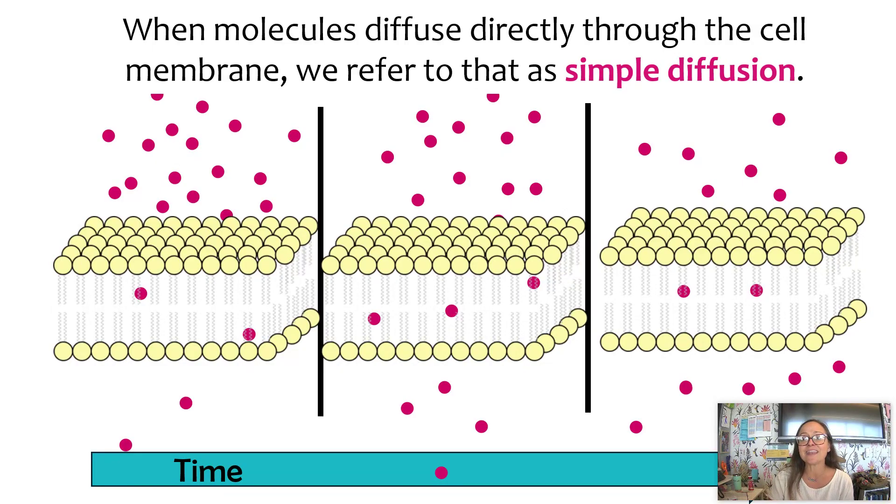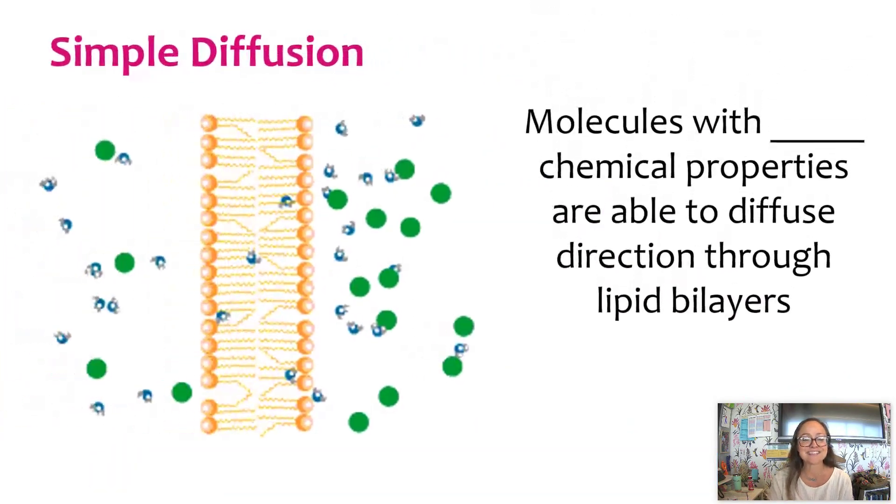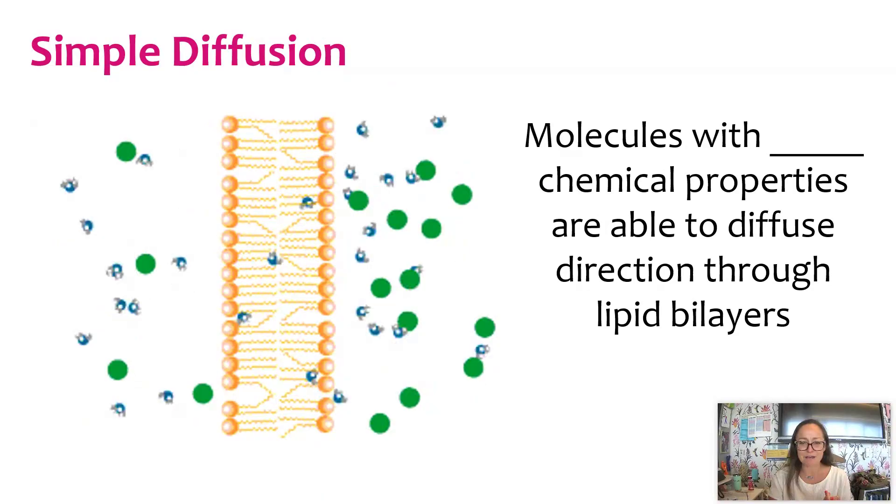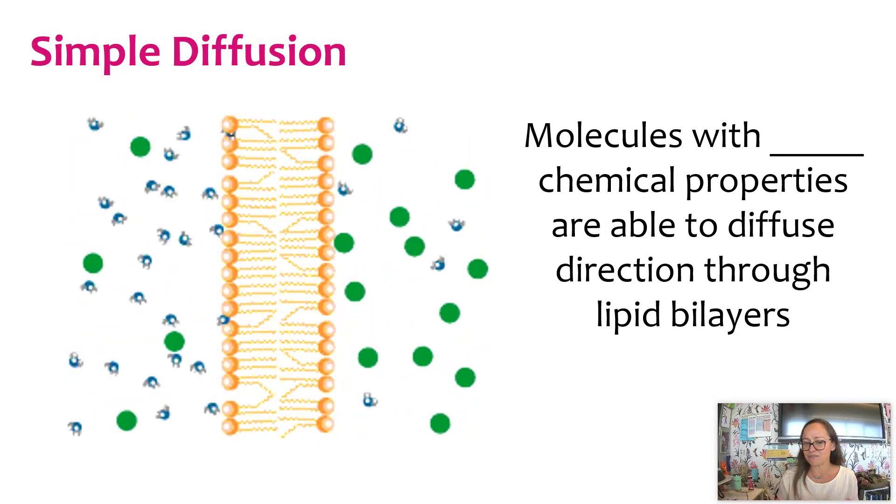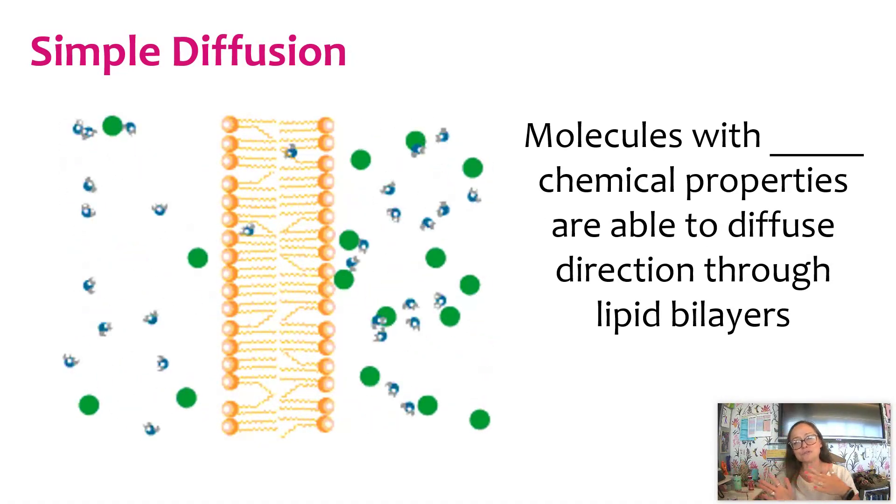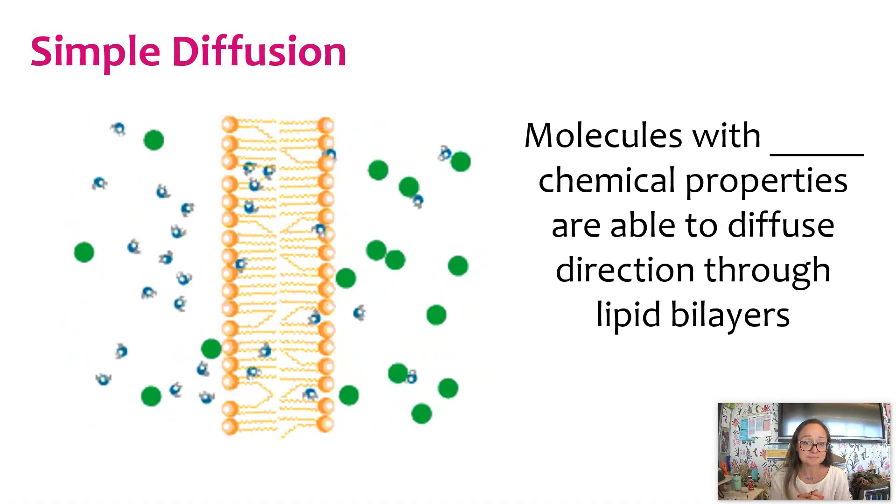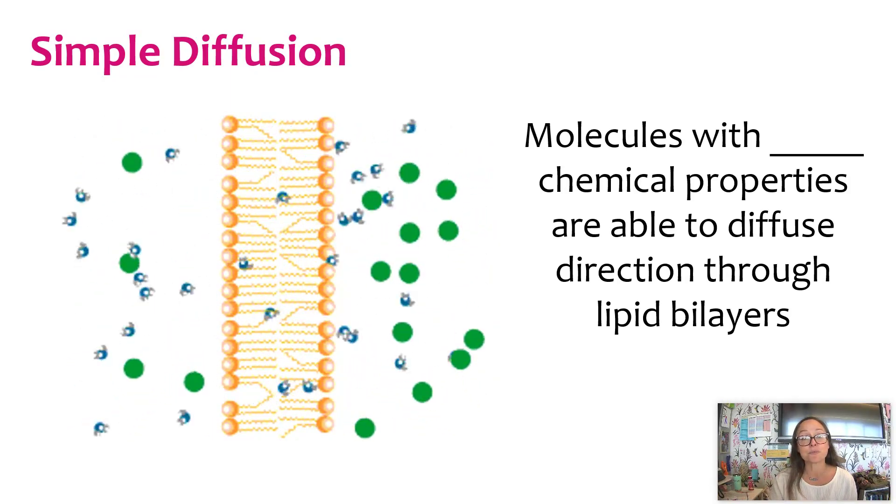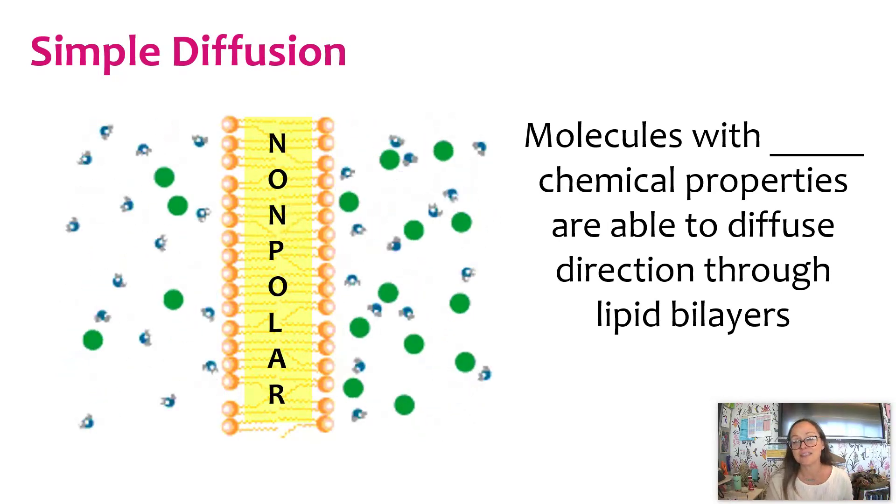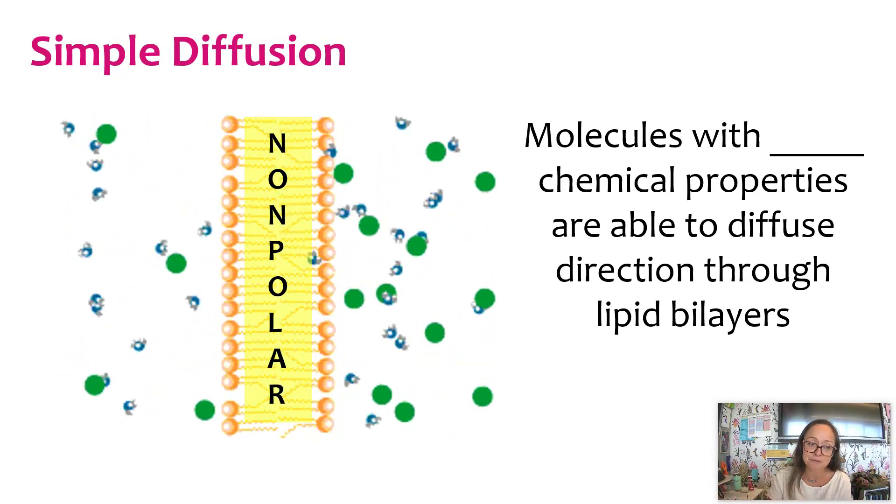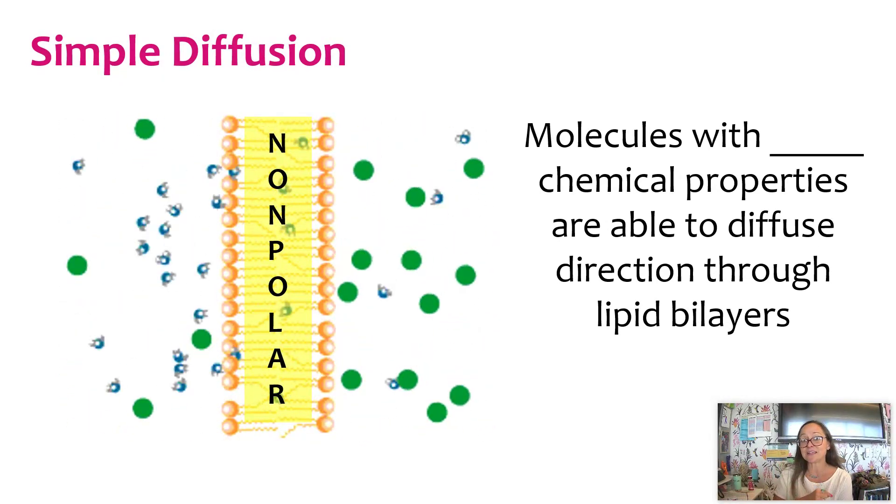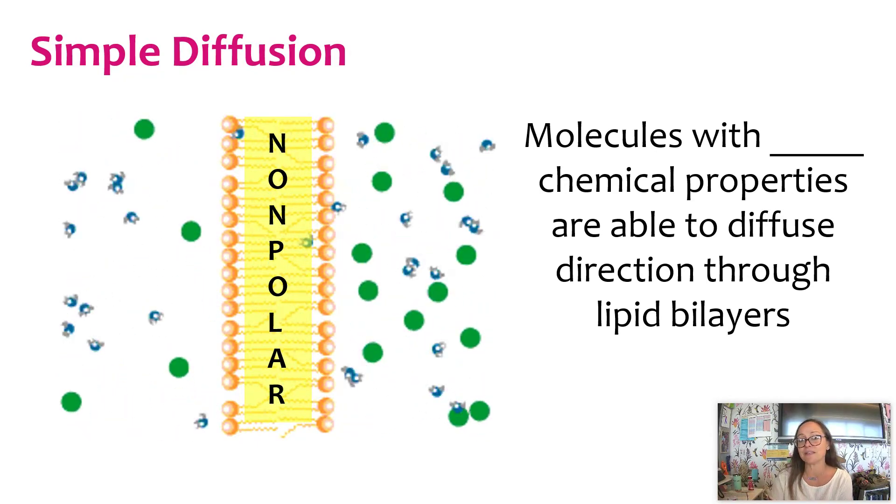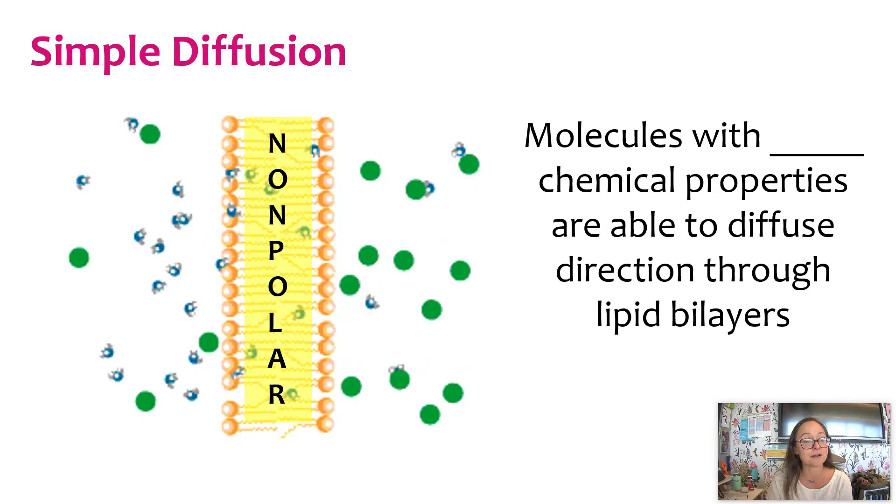Okay, so let's go ahead and look at this example here. So check yourself. Molecules with what kind of chemical properties are able to diffuse directly through that membrane? It's going to be molecules with nonpolar or hydrophobic chemical properties can get right on through that nonpolar center of the membrane, and it's those fatty acid tails that really determine the permeability of the lipid bilayer of the plasma membrane.